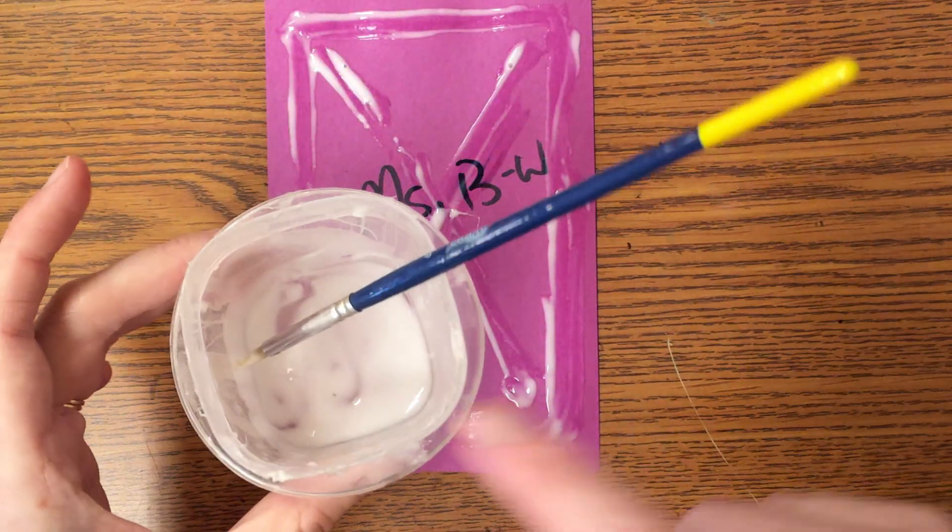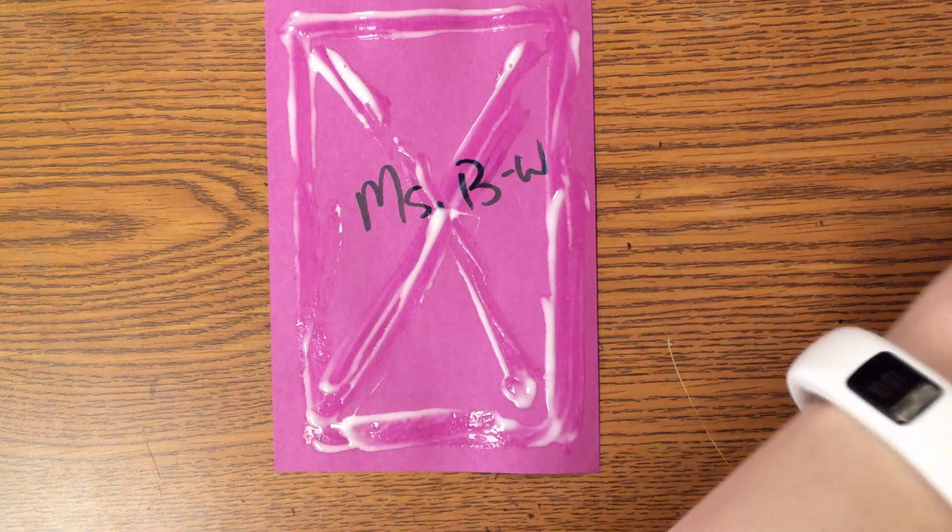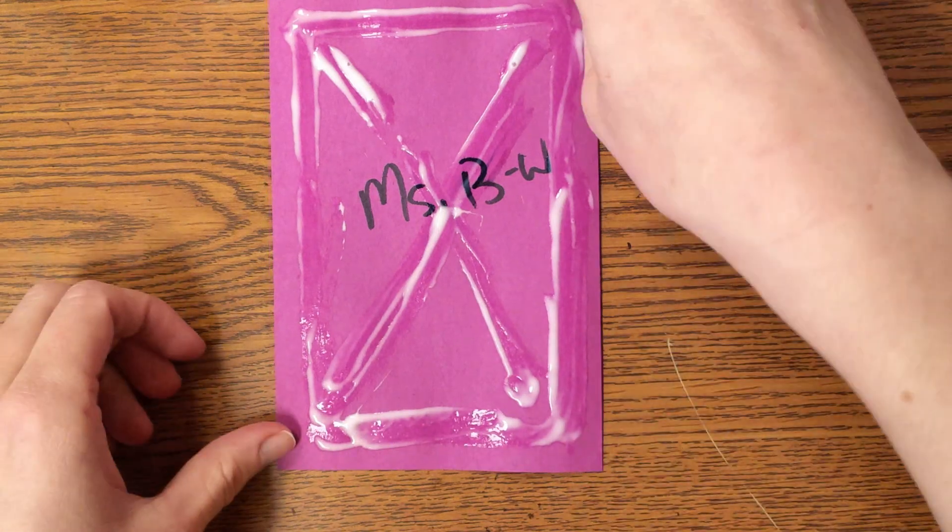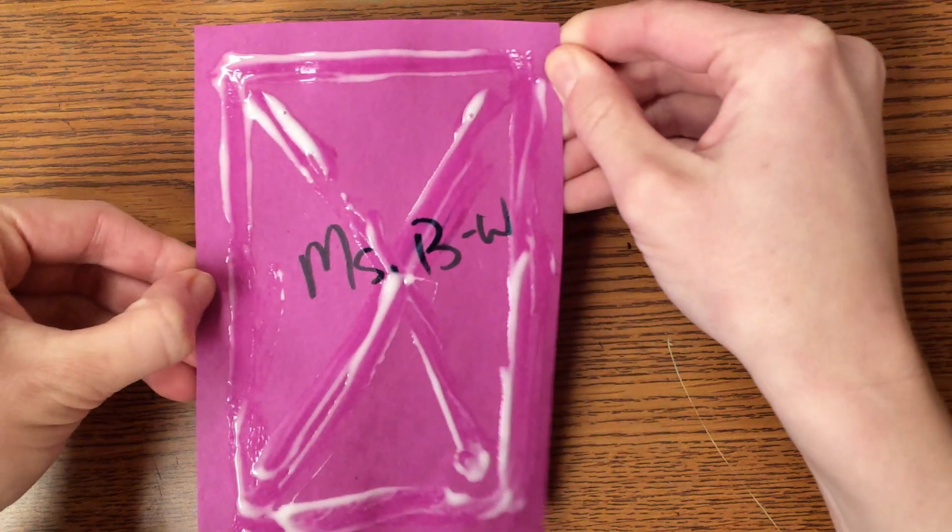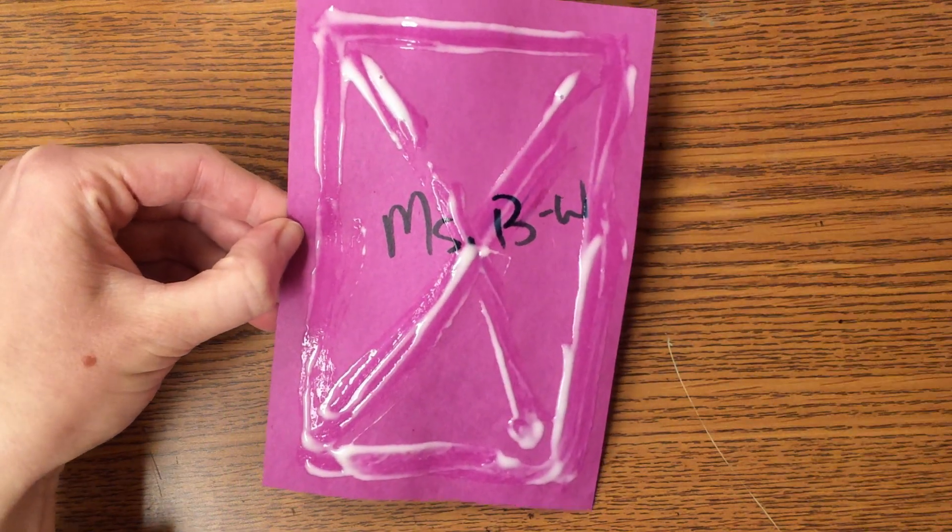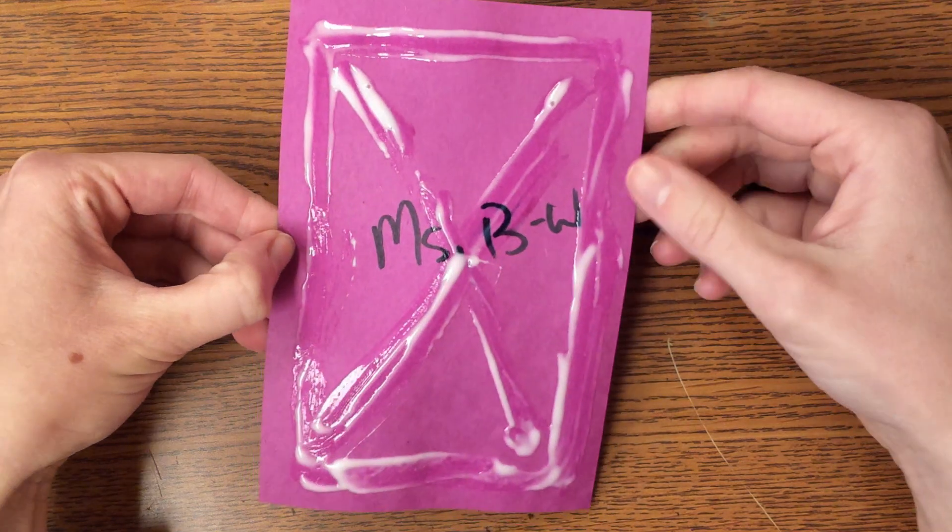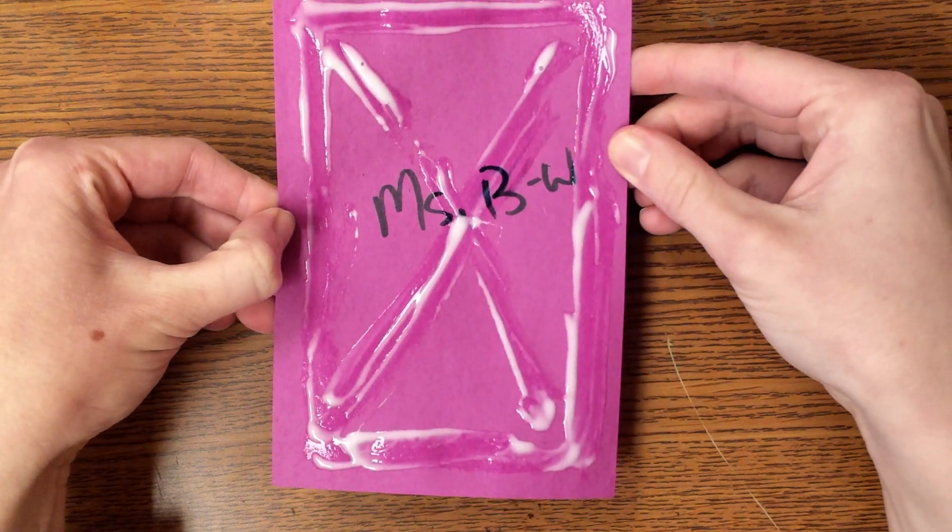Then I might call tables. I'll leave my brush in the glue cup. When I call your table, you're going to carry your artwork very carefully. I'm holding it with two hands so it doesn't slip out. And in the line, I'm going to be super quiet and not talk so I don't get distracted and get glue anywhere that it shouldn't go.